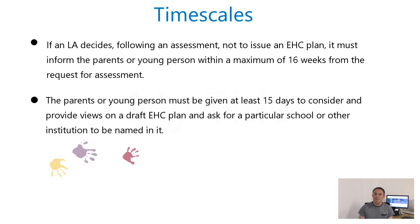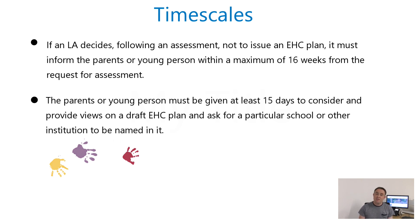Parents and carers have 15 days from receiving the draft to be able to comment on the EHC plan and to express preferences for the educational setting. Usually parents are invited to what's called a co-production meeting, where they'll meet with professionals, the local authority, and the school to look at the draft EHC plan. If the local authority refuses at week 16 to issue an EHC plan, they'll write to you, give you the reasons why, and that will trigger a right of appeal to the Special Educational Needs and Disability Tribunal.